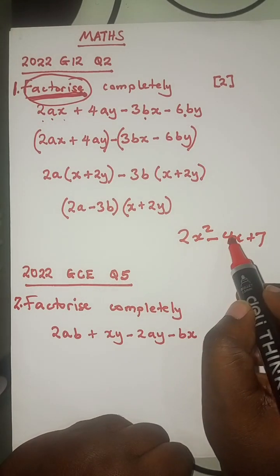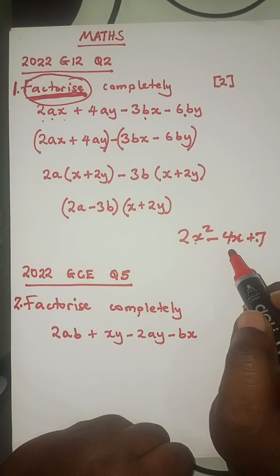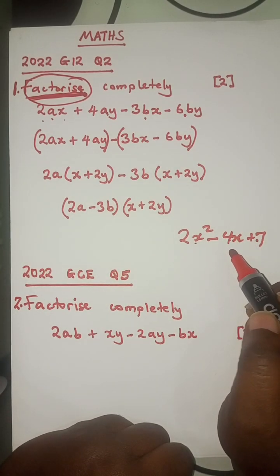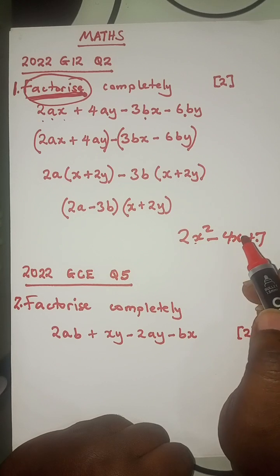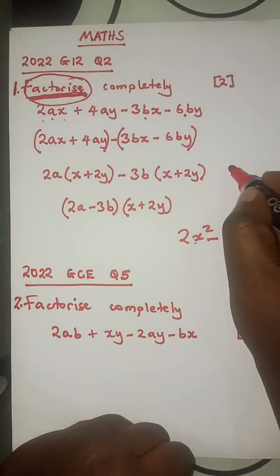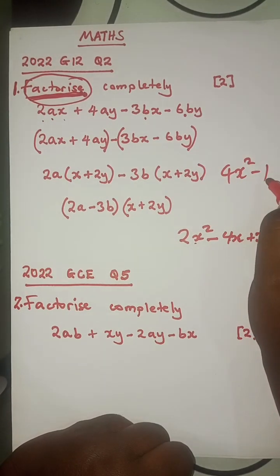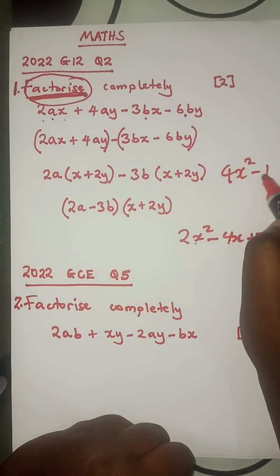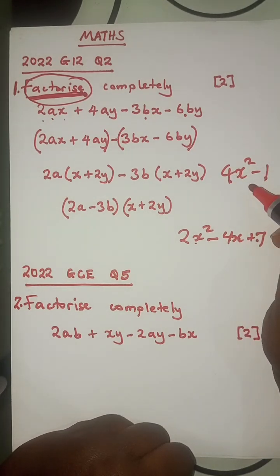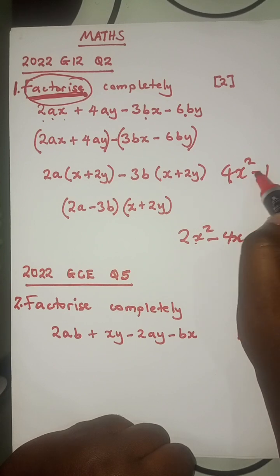When you have three terms — 1, 2, 3 — just know that you are dealing with quadratic factorization. We also have another type with two terms, whereby they will ask you to factorize, maybe 4X squared minus 1. With two terms, just know that it is a difference of two squares, and always there will be a minus in between.